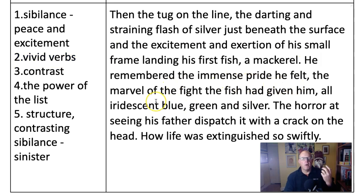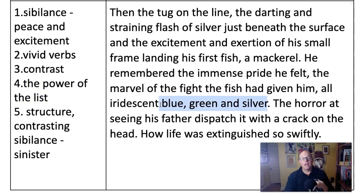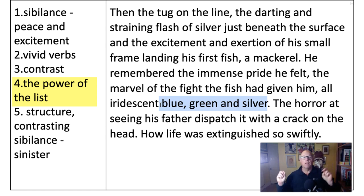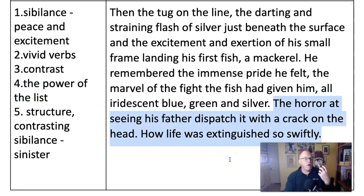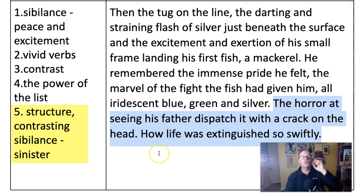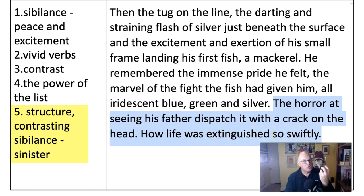'He remembered the immense pride he felt, the marvel of the fight the fish had given him, all iridescent blue, green and silver.' Again, we get the power of the list. I also like this because the colours aren't show-off ones like aquamarine and turquoise - which are just there to show you're describing. These colours actually fit the mood and the scene. The final sentence gives us a brilliant contrast: 'The horror at seeing his father dispatch it with a crack on the head. How life was extinguished so swiftly.' We've got a massive contrast in subject matter, but now we have a structural contrast which is genius. The sibilance that was so peaceful at the start of the paragraph has now become sinister - 'was extinguished so swiftly.' It sounds soft but it's describing a really harsh action.